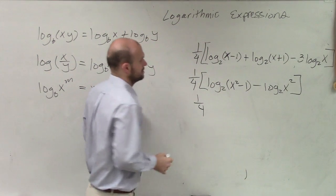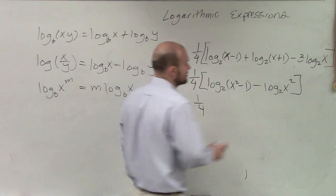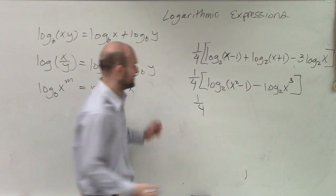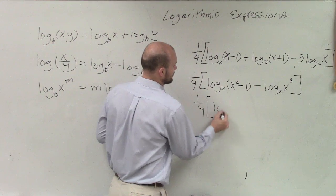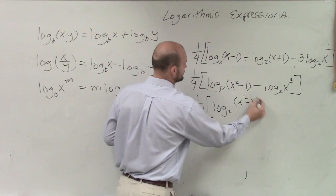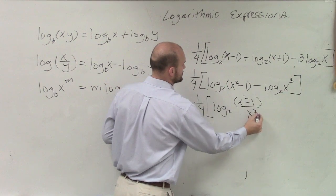I think it's going to be x squared. Oh, yes. Thank you very much. You're not getting smart with me, are you? Thank you very much. I appreciate it. So we have 1/4th log base 2 of x squared minus 1 divided by x cubed.